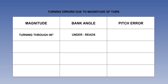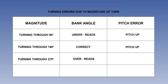Turning through 90 degrees, the instrument will under-read the bank angle and the pitch error will cause a false nose-up indication. Turning through 180 degrees, the bank angle will read correctly, but the pitch error will still result in an erroneous nose-up indication. Continuing the turn through 270 degrees, the instrument will now over-read the bank angle, while the pitch error still causes a false nose-up indication. Turning through 360 degrees, the bank angle will read correctly and the pitch angle will be correct.